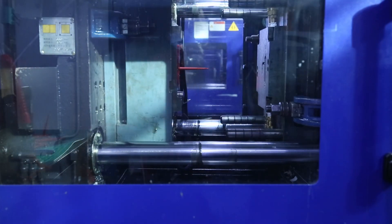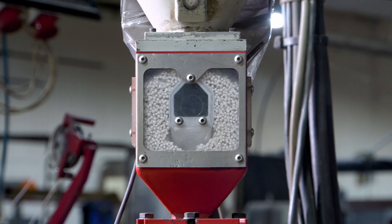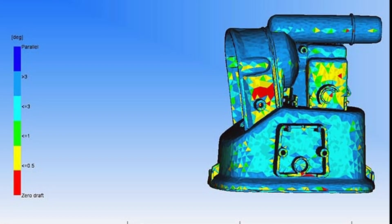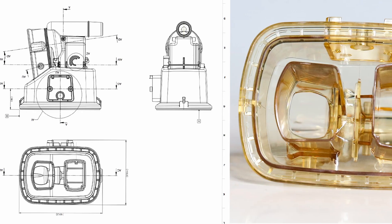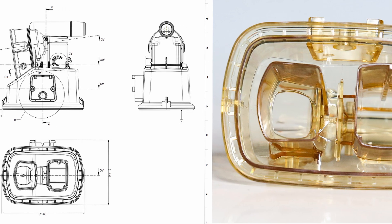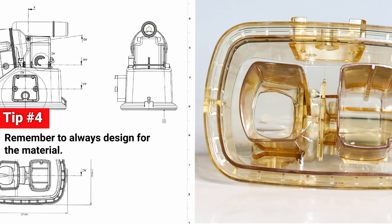For example, some resins are stickier than others. That is, they cling to the tool after cooling and so larger draft angles are needed to allow for mold release. That's just one of many considerations. So remember to always design for the material. Don't try to force the material to fit the design.